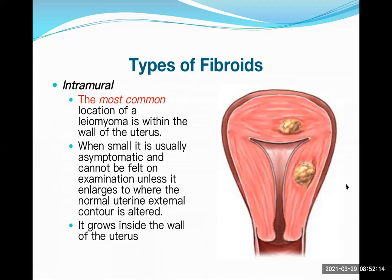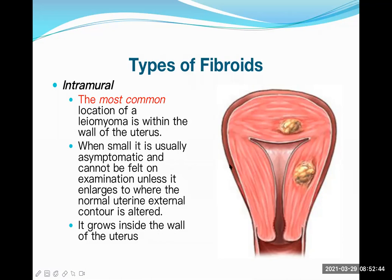The types of fibroid depend on the location. The uterus has three layers: perimetrium (outermost), myometrium (the thick muscle layer), and endometrium (the innermost layer). Accordingly, the tumor is named based on where it is located.